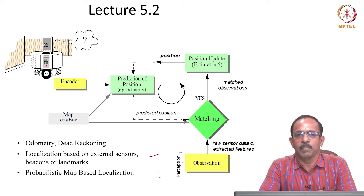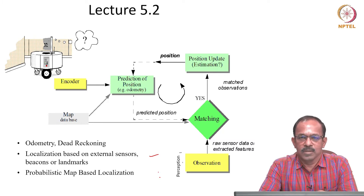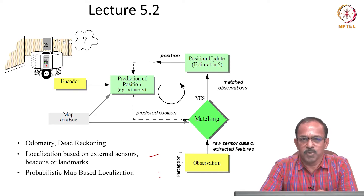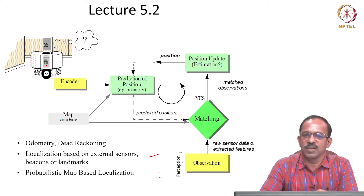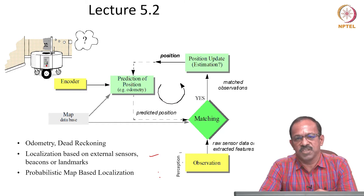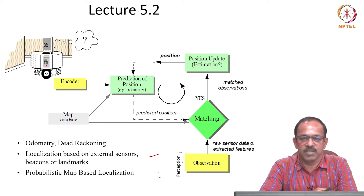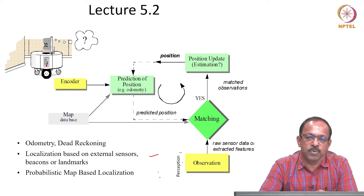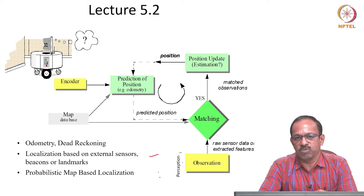Hello everyone, welcome back. In the last class we discussed about localization of mobile robots. We briefly talked about the importance of localization, the challenges involved in localization, how the sensor properties affect the localization and the error propagation in the localization process. We also mentioned about the 5-step process involved in the map-based localization.